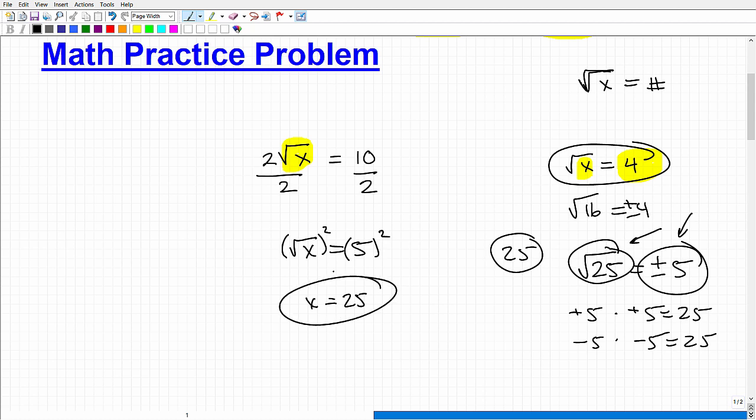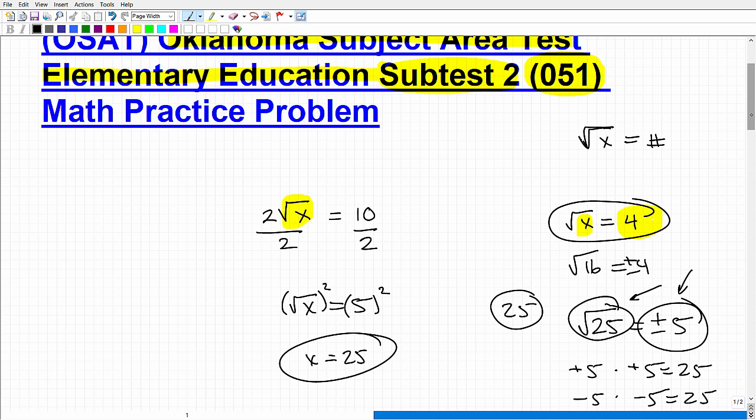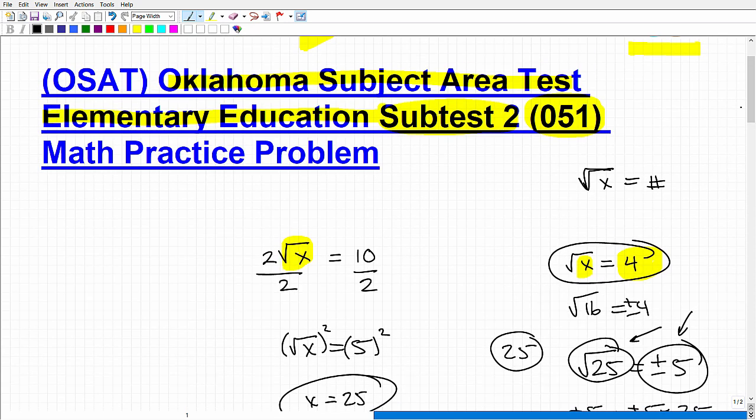But if I square the left-hand side, I also got to square the right-hand side. So 5 squared is 5 times 5 is 25, and that is our solution. Anyways, again, this is a real basic example or basic level square root equation. Something definitely you should be able to handle if you're fully prepared for the subtest 2 on this particular Oklahoma subject area test.